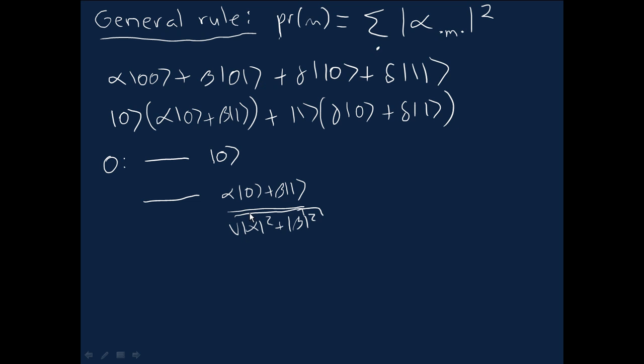You might wonder or worry that maybe we'd be dividing by 0, but actually, because the probability of getting outcome 0 is just alpha squared plus beta squared, the only way we'd be dividing by 0 is if the probability of this measurement outcome was in fact 0. So it couldn't happen. In practice, this is not actually a problem.